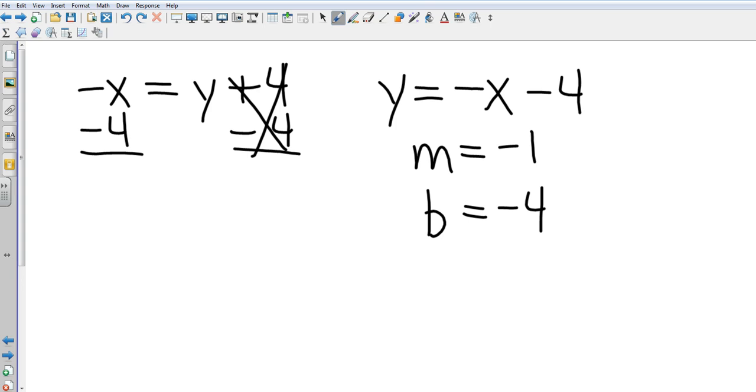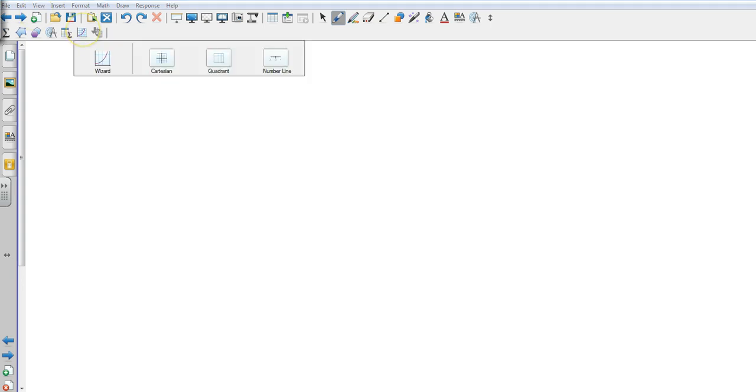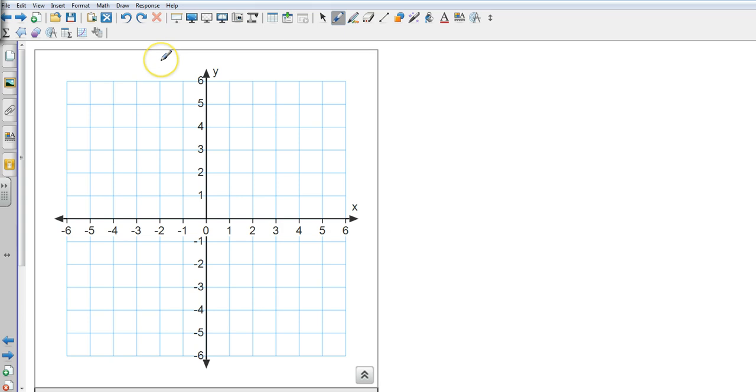Alright. So now we're going to take it one step further. And we're going to graph it. So how about I have y equals x minus 2. Again, the y is by itself. So I know that I have a slope. The imaginary, not imaginary, but the number in front of the x, the coefficient. That's 1, and the y-intercept is negative 2.